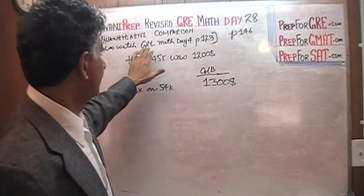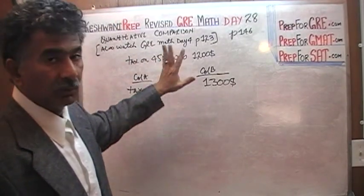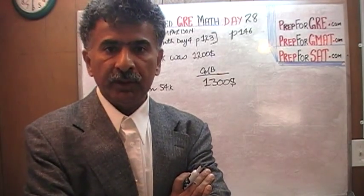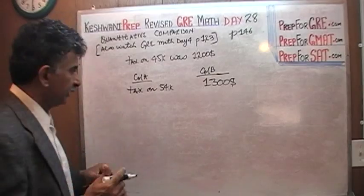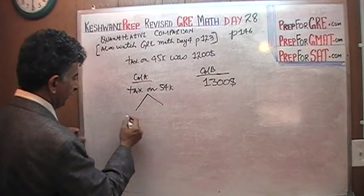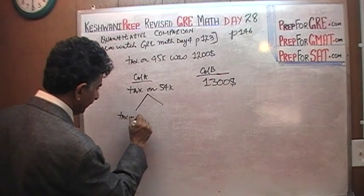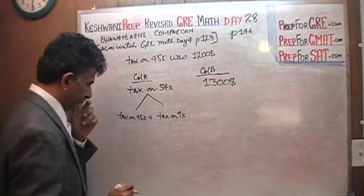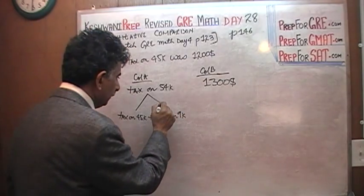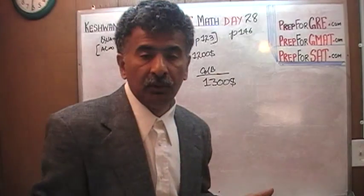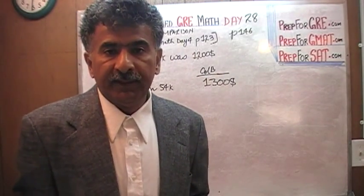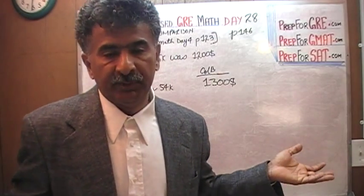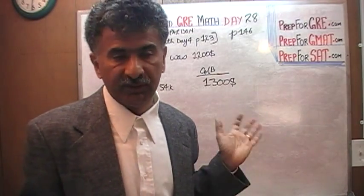I am going to do a quick version here — the quick and dirty method. The tax on $54,000, whatever it is, has got to be the tax on $45,000 plus the tax on $9,000. For example, if I walk out of the grocery store with $7 worth of stuff, then whatever tax I paid on $5 plus whatever tax I paid on $2 has to add up to the tax I paid on $7, assuming everything is being taxed — which is the case here.